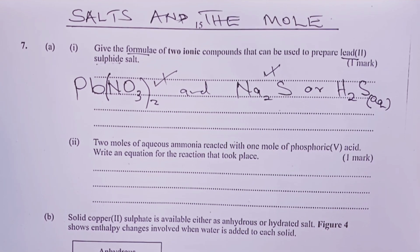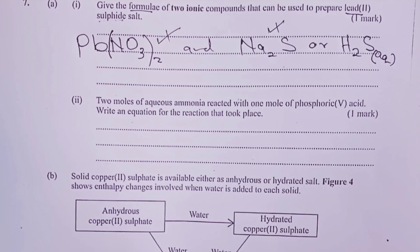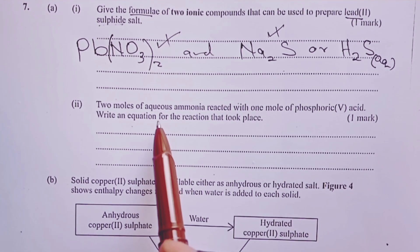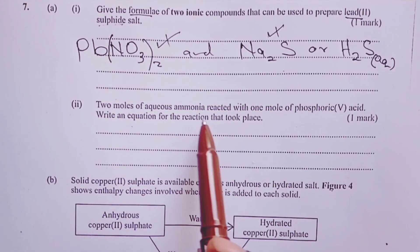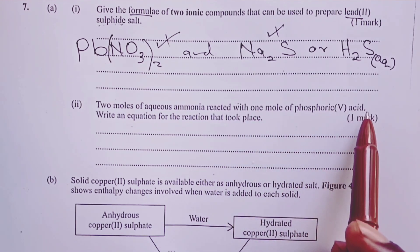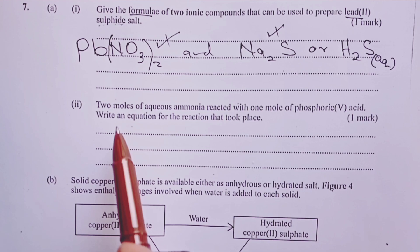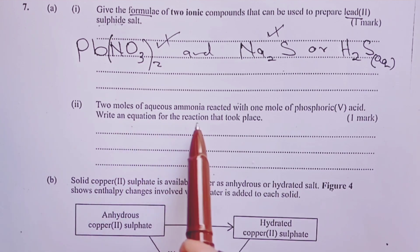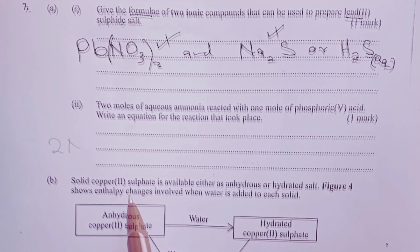Part two. We are told two moles of aqueous ammonia reacted with one mole of phosphoric(V) acid. The question asks us to write an equation for the reaction that took place.